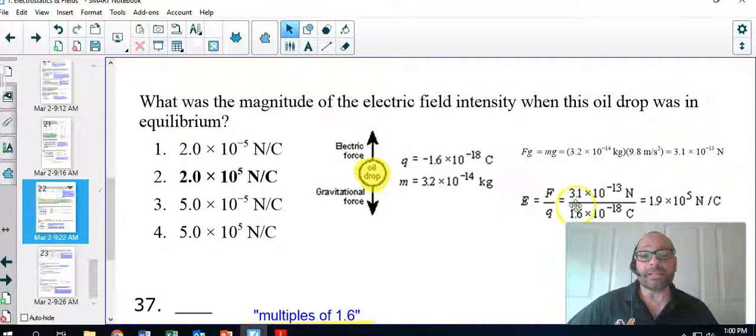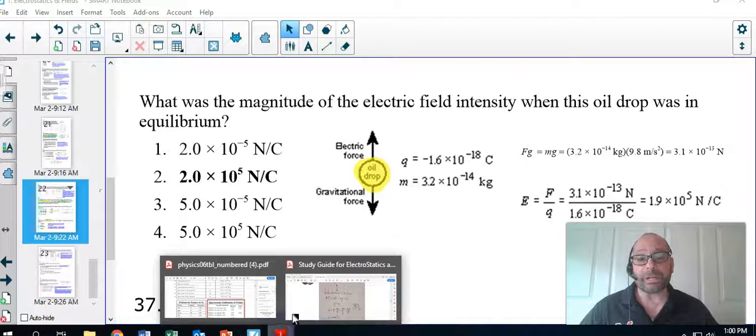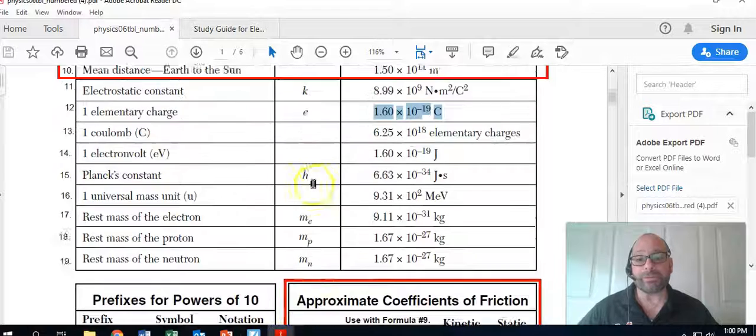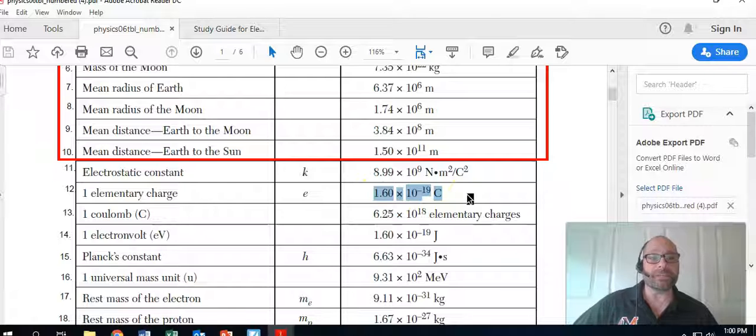Okay, that's it. That's how the Millikan electric field experiment worked to determine the fundamental charge E or Q, which you do see right here on the front page of the reference table as 1.6 times 10 to the negative 19th Coulomb. We'll see you in the next video.